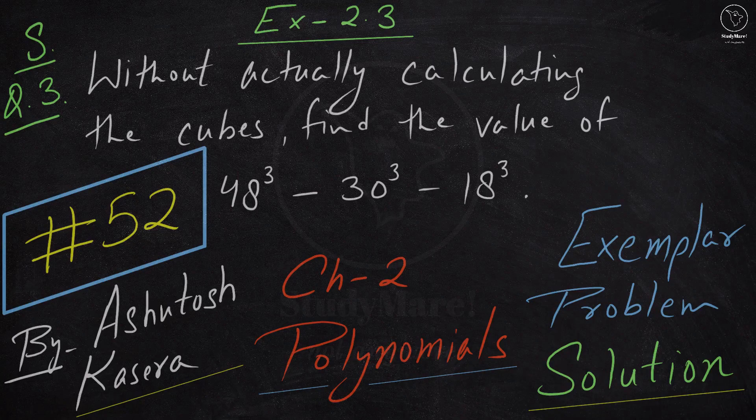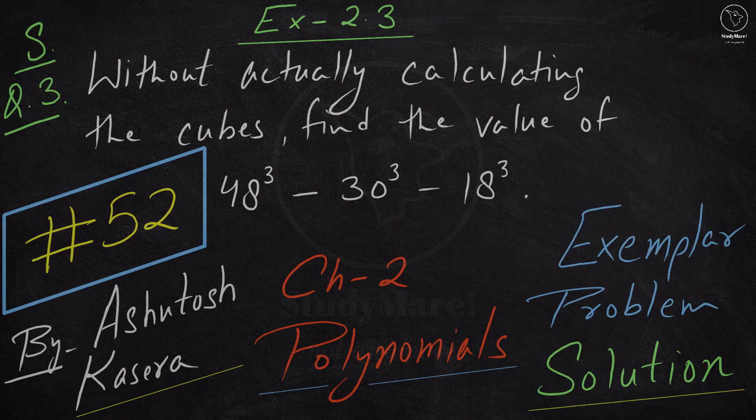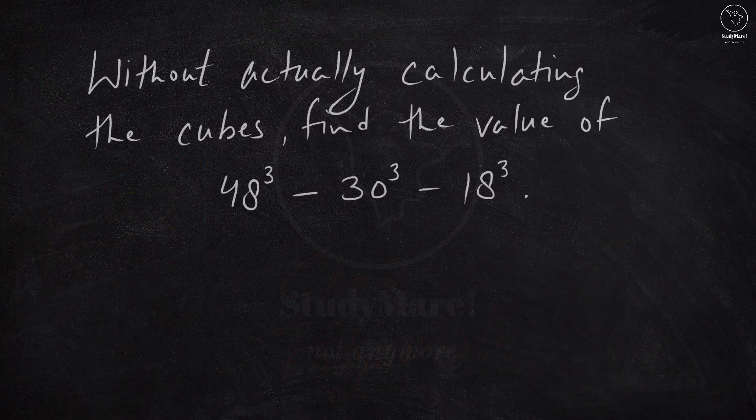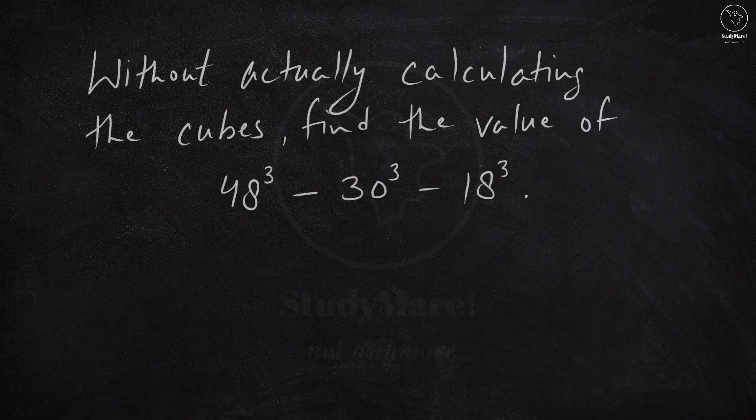Without actually calculating the cubes, find the value of 48³ - 30³ - 18³. Now this is quite an interesting question and it helps you understand why maths is important and why using certain identities, formulas and specific procedures can simplify your entire calculation process.